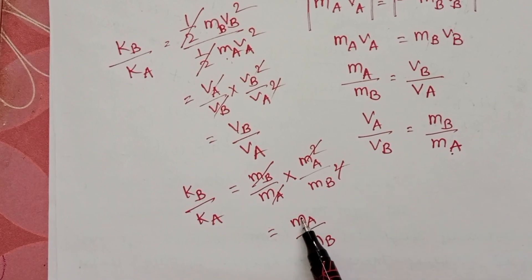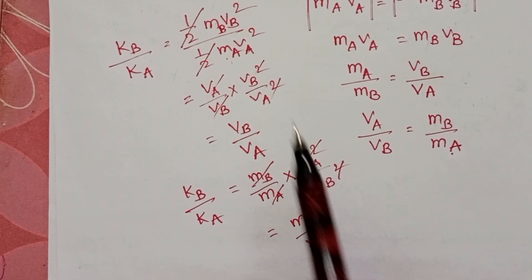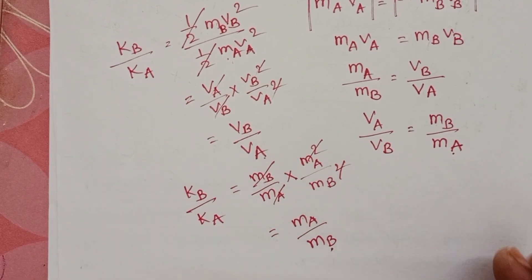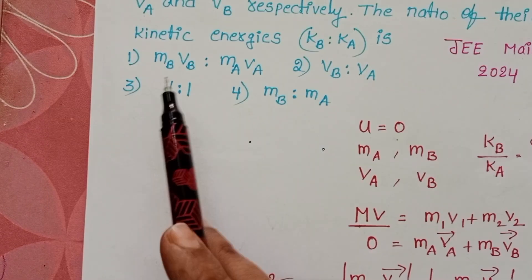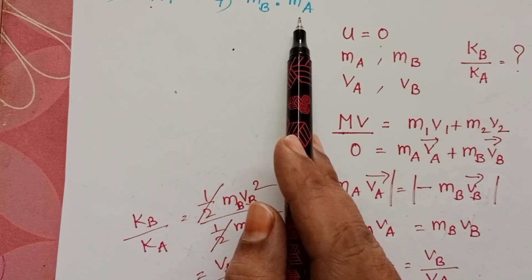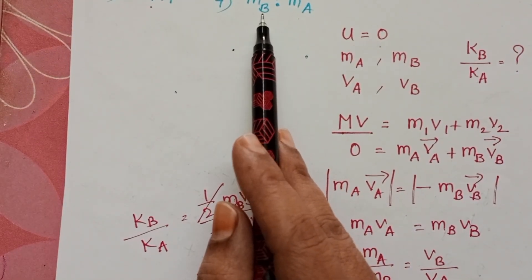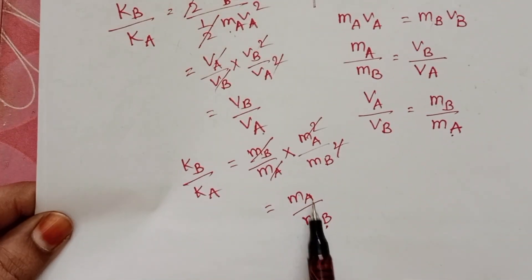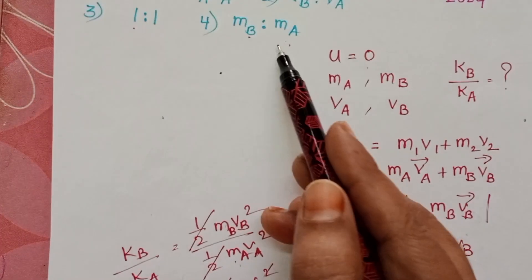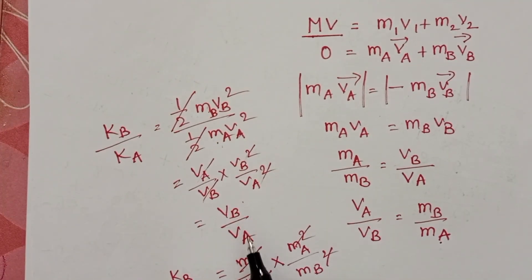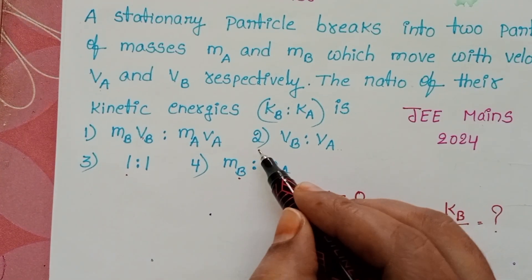So the ratio of kinetic energies is Ma/Mb in terms of mass, and Vb/Va in terms of velocity. Checking the options: the first option is not correct, the third option is not correct, and the fourth option gives Mb/Ma which is also not correct. The second option, which gives Vb/Va, is correct.